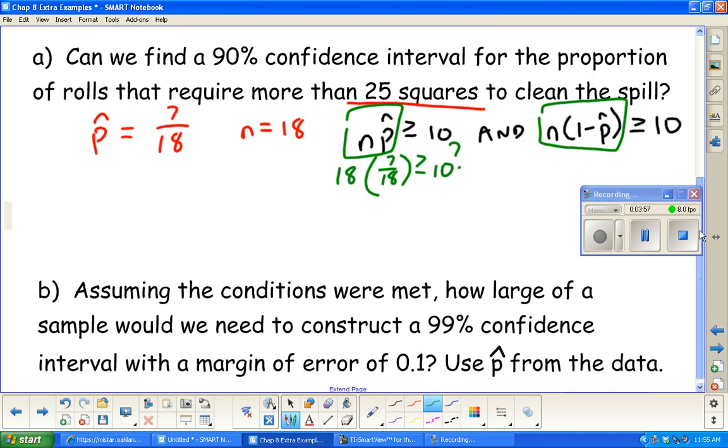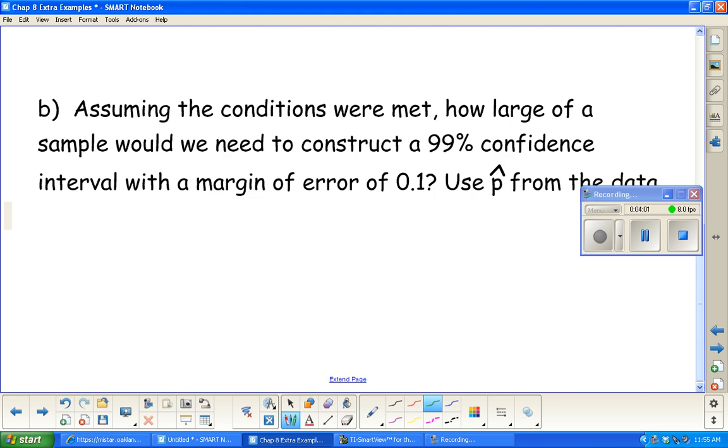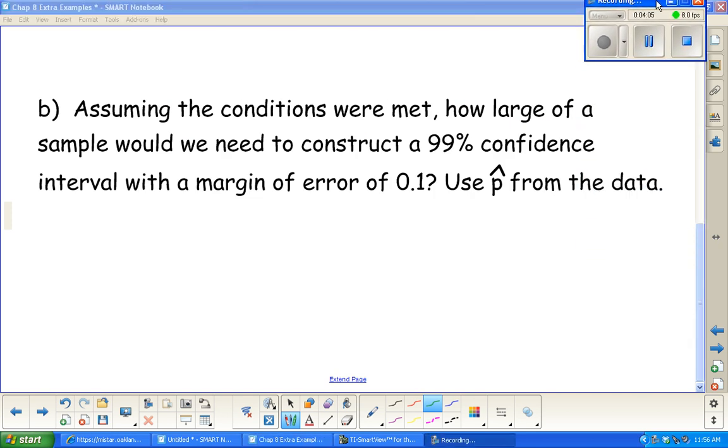Let's go ahead in part B. Assuming those conditions were met, how large of a sample would we need? So we're looking for N. To construct a 99% confidence interval with a margin of error of 0.1. And they're telling us to use P hat from the data. We know P hat from above was the 7 out of 18. If we didn't have the sample yet and we did not have a P hat to use, that's when you would use 0.5 for P hat.